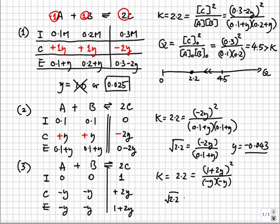Taking the square root of both sides, we get 1 minus 2Y over negative Y equals 1.48. And Y comes out to be equal to negative 0.287.